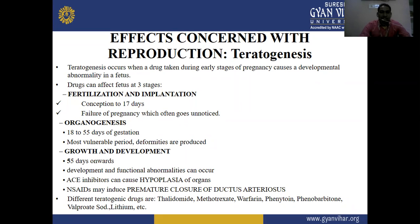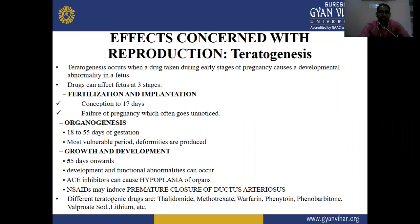Drugs can affect the fetus at three stages. First, fertilization and implantation — conception to 17 days — which often causes failure of pregnancy, often unnoticed. Next is organogenesis. Fertilization means the fusion of haploid gametes — egg and sperm — to form the diploid zygote.